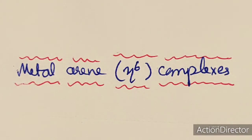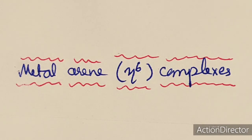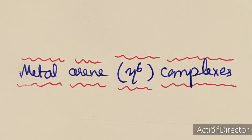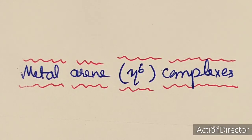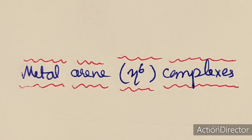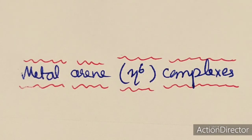Today we will discuss metal arene complexes — arene meaning benzene complexes. In these complexes, arene acts as an eta-6 ligand, meaning it is hexahapto, where all six carbon atoms are joined to the metal center. We will discuss one by one the preparation, properties, and bonding in metal arene complexes.